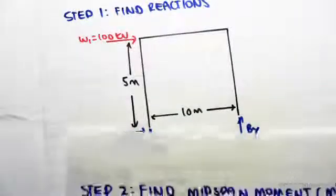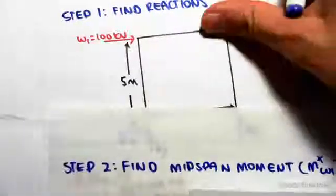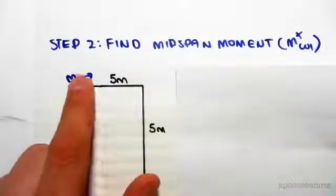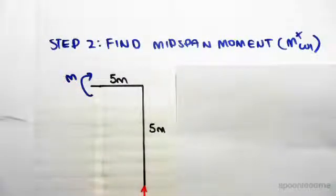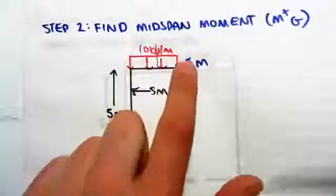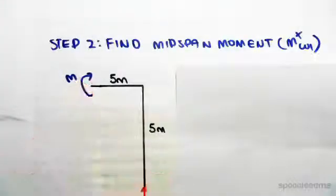So if we look at the right hand side, taking a cut on the right, it's very important that you ensure your moment goes the opposite way to what you're doing on the left. When we were cutting on the left, our moment was going anticlockwise. Now my moment is going clockwise.